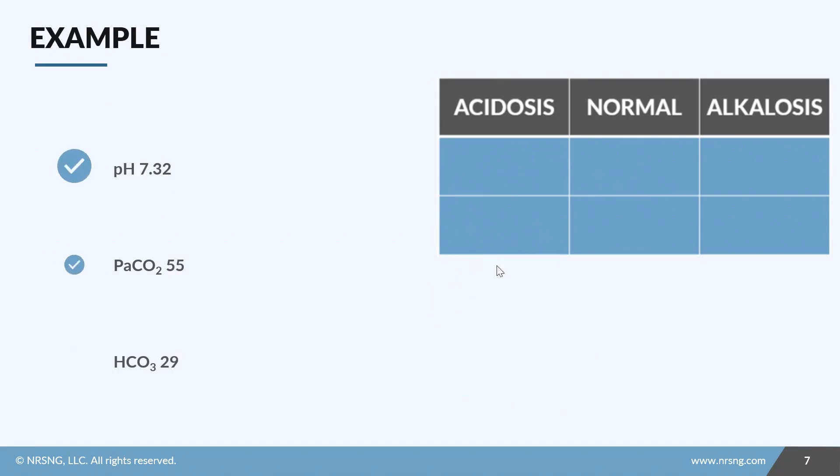Okay, let's do another one. Step one: pH of 7.32 is acidotic. CO2 of 55 - high CO2 equals acid, so that is also acidotic. Bicarb of 29, well that's high, so that is alkalotic. Okay, so right away step two: you can see we have a respiratory issue and we know it's an acidosis, so that's respiratory acidosis.